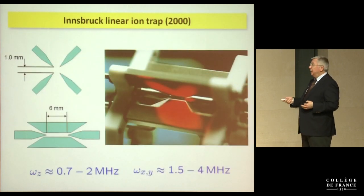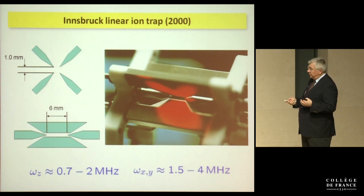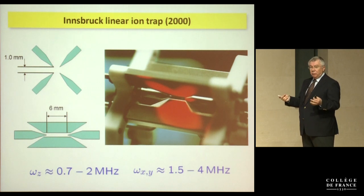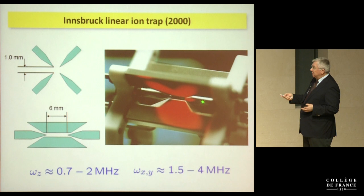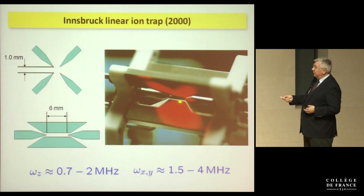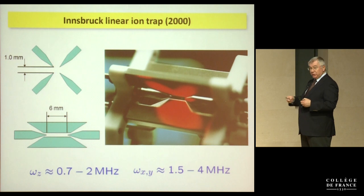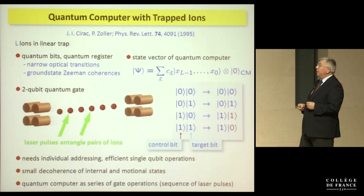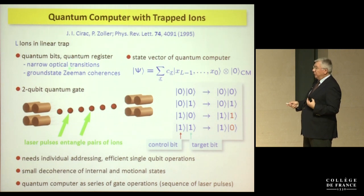Our workhorse trap, used since the year 2000, provides a harmonic oscillator for the trapped particle, characterized by three trap frequencies: about 1 MHz along the axis and about 2 MHz radially for a calcium ion. The trap is about 1 mm laterally and about 6 mm between the tips. Now, back to the Cirac-Zoller idea: we store ions side by side and encode quantum information in optical resonances or ground-state Zeeman coherences.